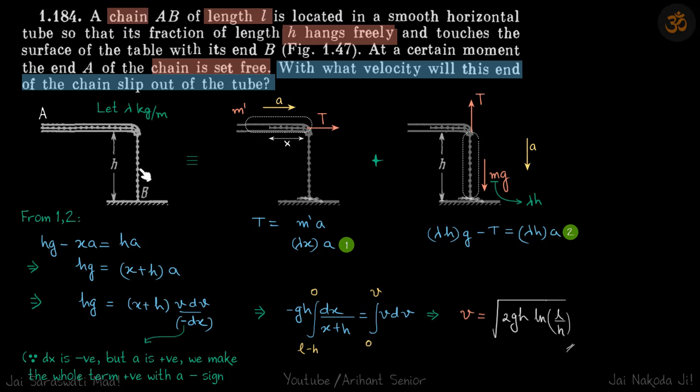The force which is pulling down the chain is mg. Let's consider the linear mass density of the chain to be λ kilograms per meter.